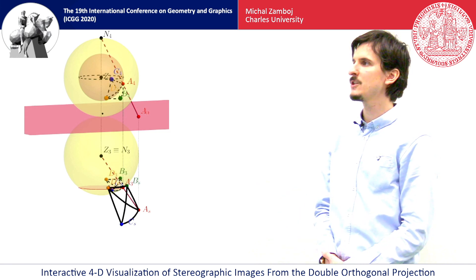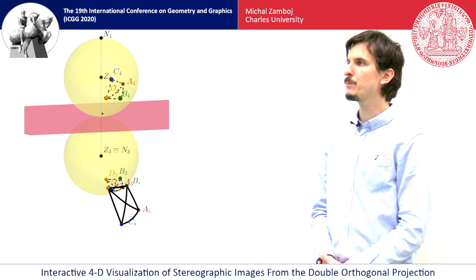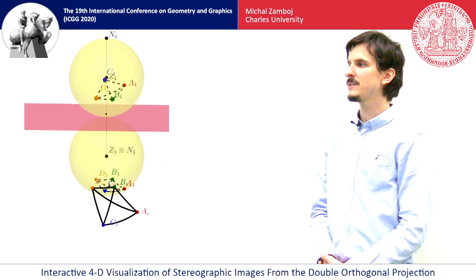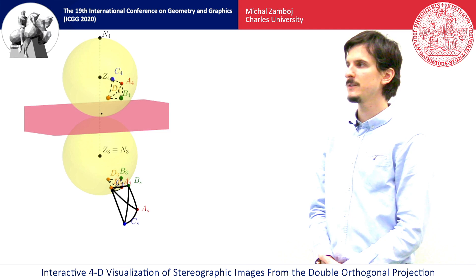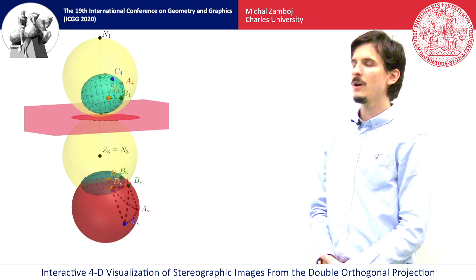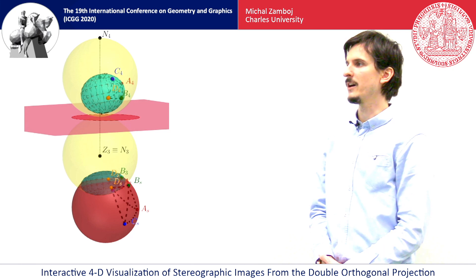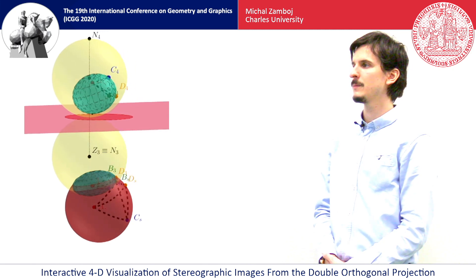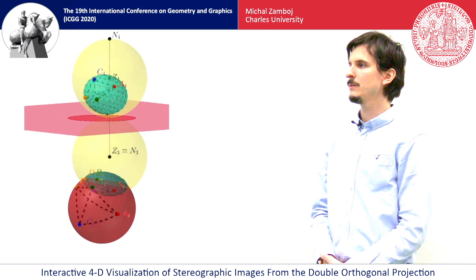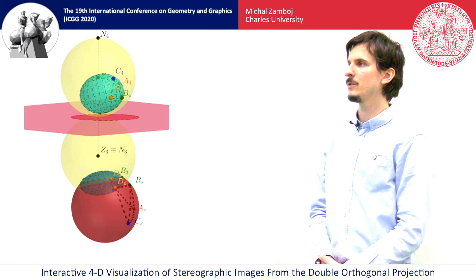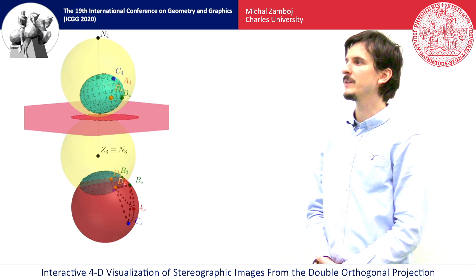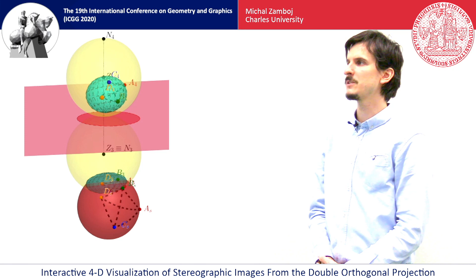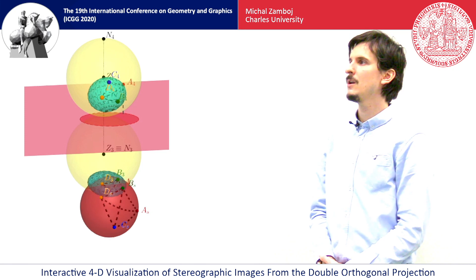Moreover, we can project more points and have something like a hyperspherical tetrahedron. The stereographic projection again preserves circles, so the edges of the tetrahedron are circular arcs. Now we can circumscribe a two-sphere around this tetrahedron. We can see its stereographic projection and also its pre-image in the double-orthogonal projection. Conjugated images of this two-sphere will be two ellipsoids, again circumscribed around the conjugated images of the tetrahedron.